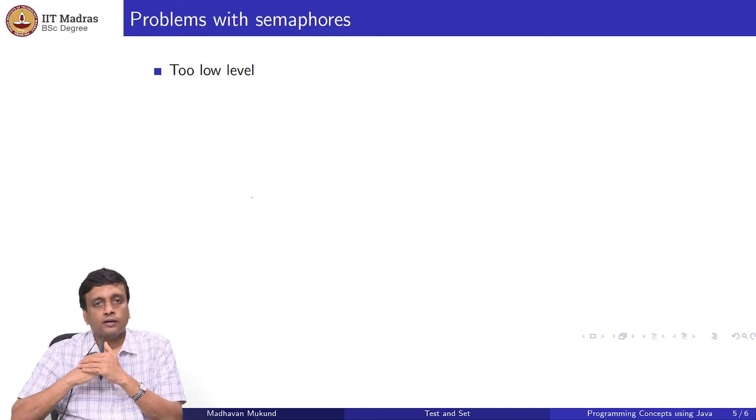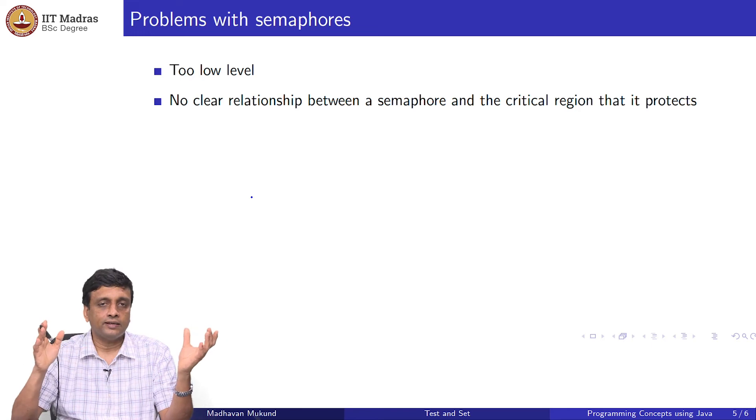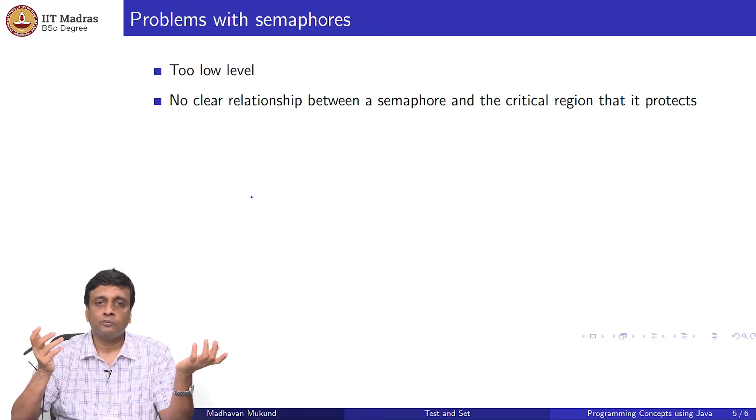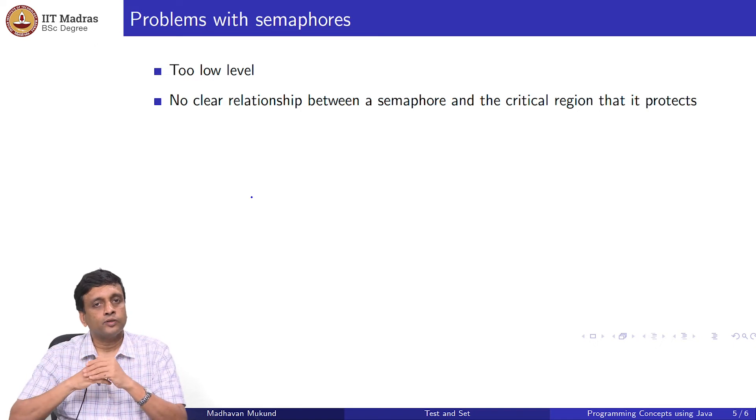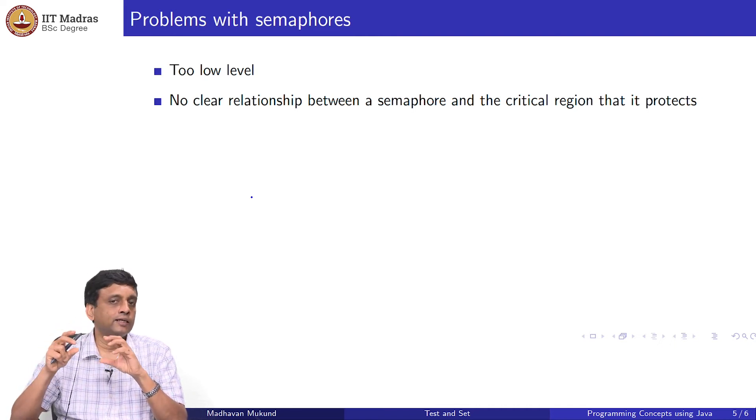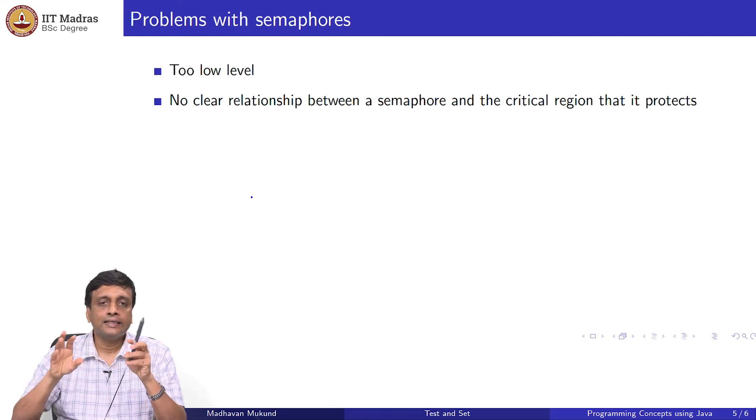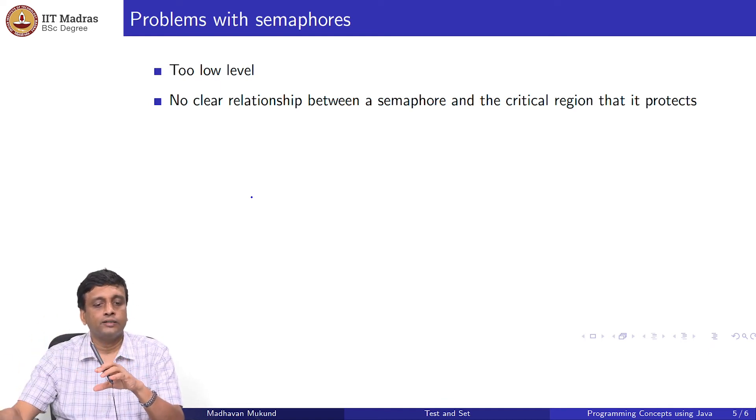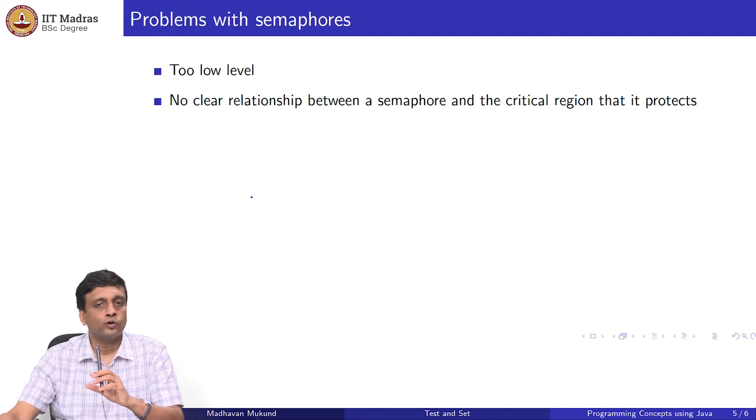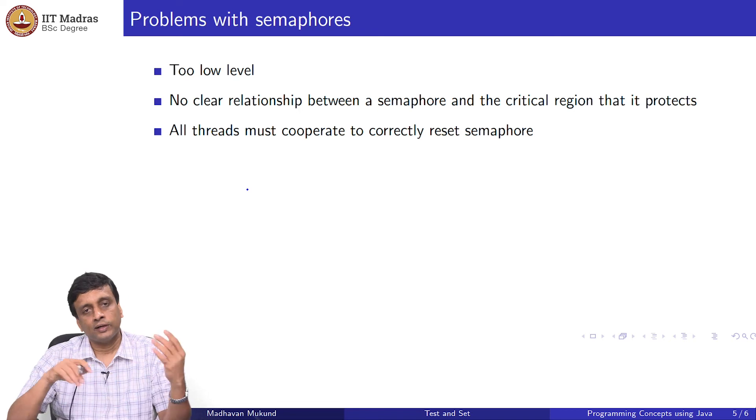Even though this is better than using Peterson's algorithm, it is still a little low level. The reason it is a little low level is that we have these P's and V's and it is really the same situation that we have seen in other kinds of coding examples. The question is whether you trust the programmer to do it correctly or not. It is only a question of discipline that you put a P before the critical section and a V after the critical section. There is nothing to prevent you from putting a P anywhere or putting a V anywhere. There is no clear relationship or requirement that this is the critical section and therefore these are the semaphores which guard it. The connection between the semaphore and the critical section is left to the programmer to decide and it is not really a part of the code in any sensible way.